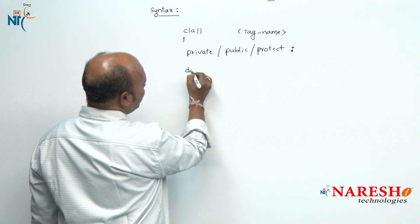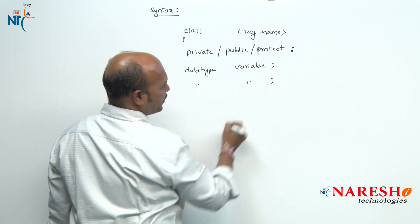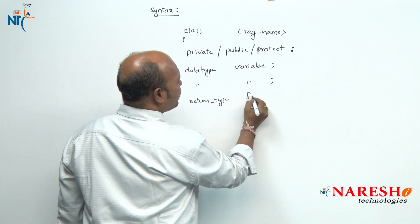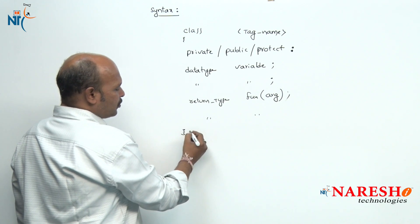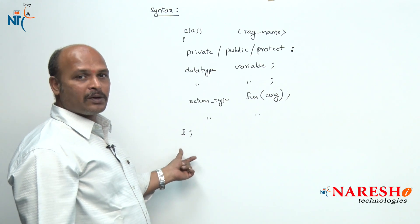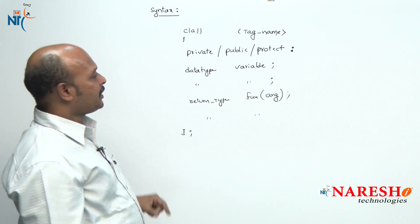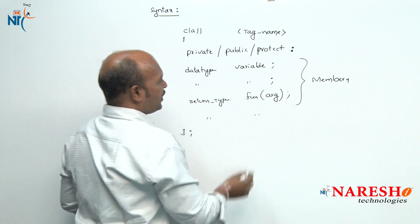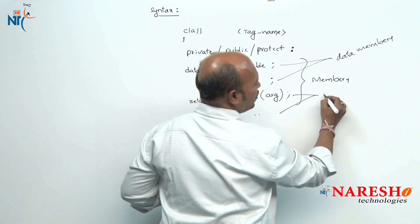Inside the class, we declare a data type followed by variables and also functions with their return type and arguments. The class should end with a closing bracket and a semicolon. Variables declared inside the class are called data members, and functions declared inside the class are called member functions.